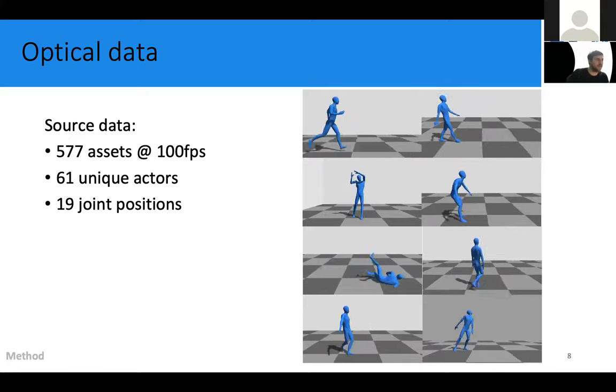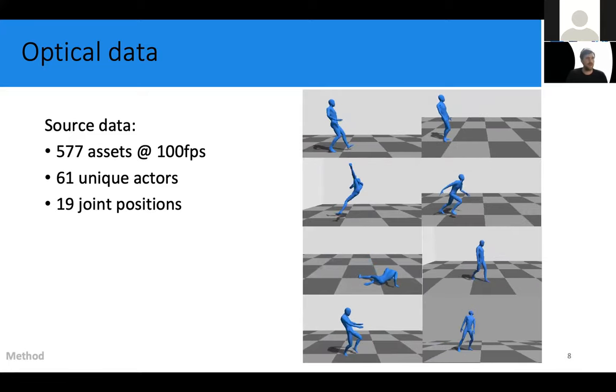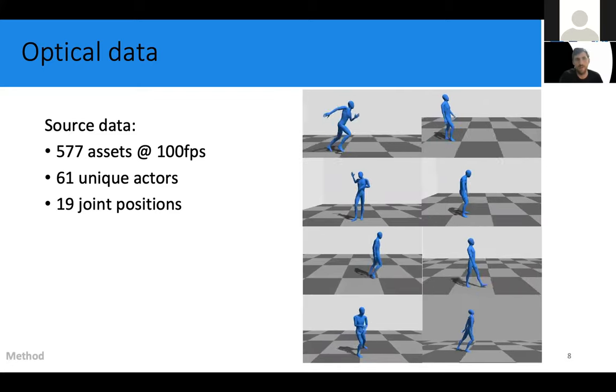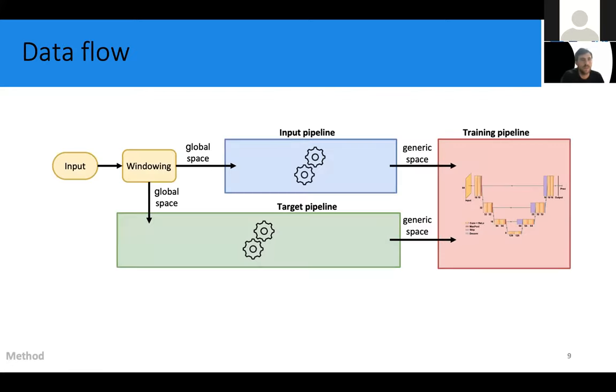For more information about the data, I'd like to refer to the paper where we describe it in a bit more detail. Now on this slide, you can see a schematic of our data flow. So the raw input data flows through a preprocessing pipeline before it's finally fed to a neural network for training. I'm just going to go quickly step by step through these different parts of this preprocessing pipeline.